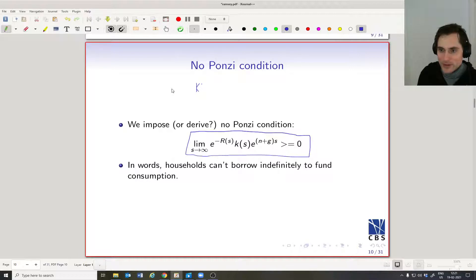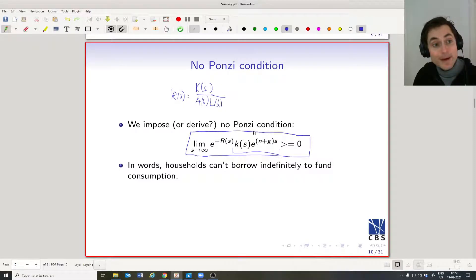Let me just write this so you can see what I'm talking about. Little k(s) is equal to big K(s) divided by A(s)L(s). The denominator here is growing at this rate, so in a sense here, we're taking away the growth of the denominator, so you can really think of this expression as just being big K(s), the amount of capital or the amount of savings in the household.